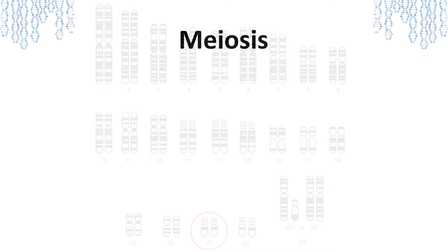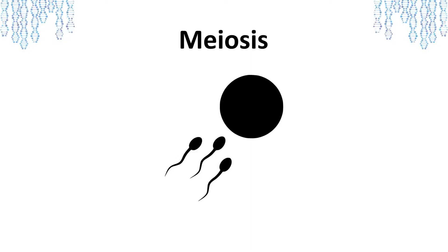The mechanism is actually an error in the process known as meiosis. Meiosis is a type of cell division that replicates egg and sperm, which are our sex cells that we use for reproduction. These cells are also referred to as gametes.